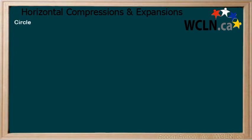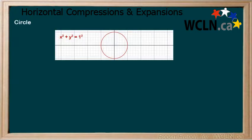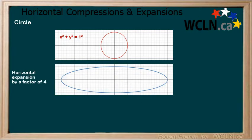Consider a circle. Here is both the equation and graph of a circle. Now apply a horizontal expansion by a factor of 4. To do this, we multiply x by 1 over 4. See how the graph of the circle changes as well.